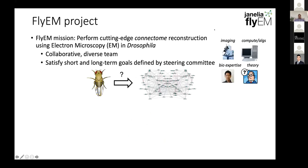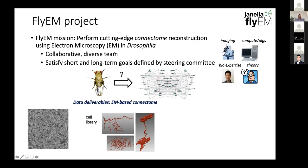It's useful to start with a quick description of what my group does. The project at Janelia that orchestrated this is called the FlyEM project. Janelia has a concept called team projects, which facilitate a collaborative working environment between multiple scientists and staff scientists. The goal is to satisfy different short-term and long-term goals defined by a steering committee. In this case, our goal is to take EM data, extract neuronal shapes and synapses to make a cell library and connectivity library, and finally a graph that people can analyze.